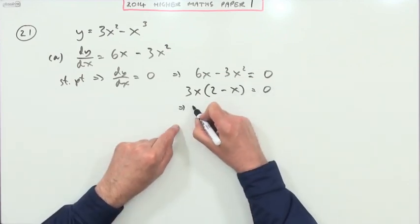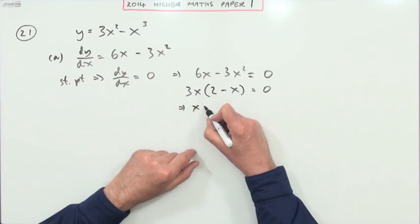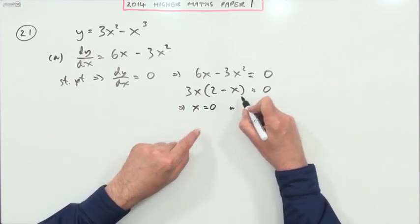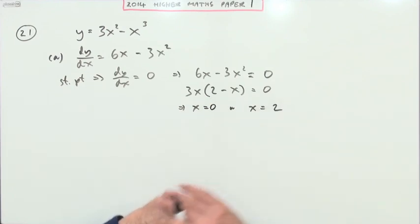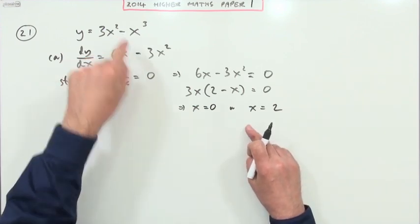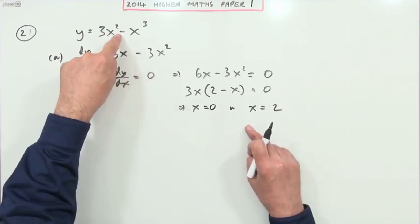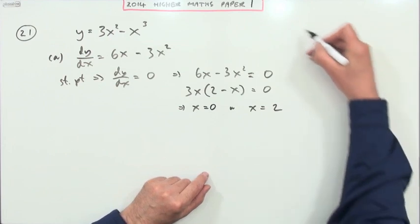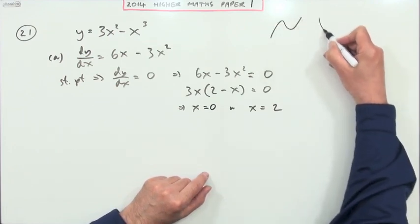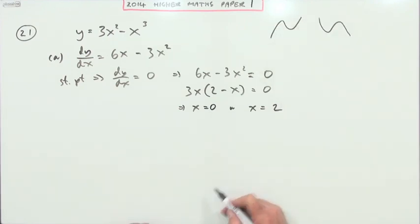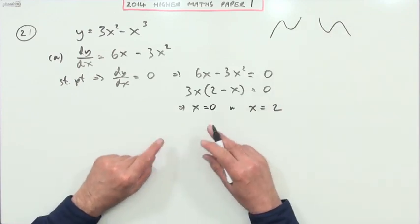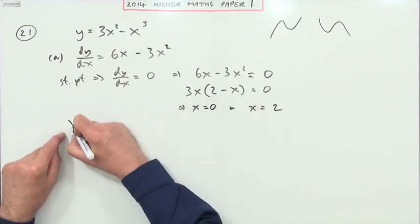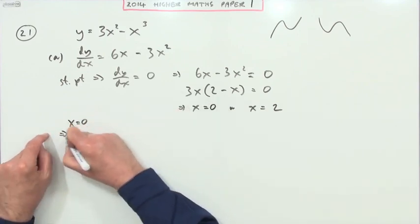Factorising: six x minus three x squared equals zero. Common factors are three and x, leaving two minus x. So either three x equals zero, giving x equals zero, or two minus x equals zero, giving x equals two. Those are the x-coordinates of the two stationary points. You can already see what the graph looks like — it's an upside-down cubic with two stationary points.